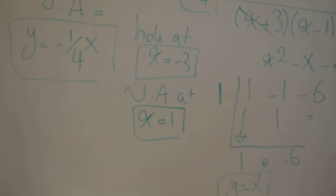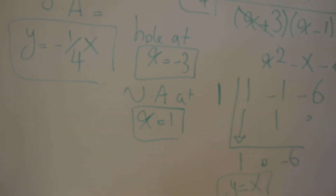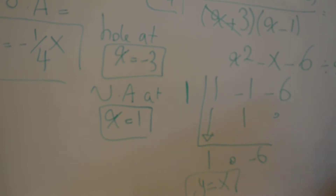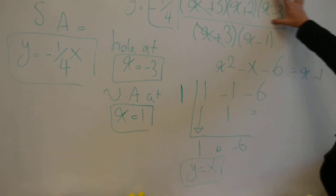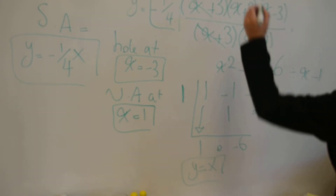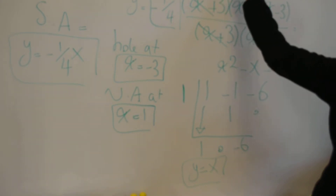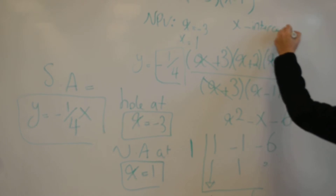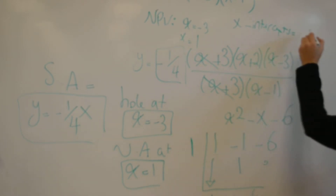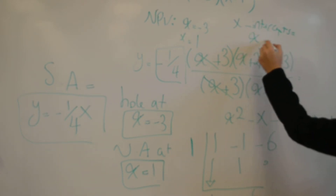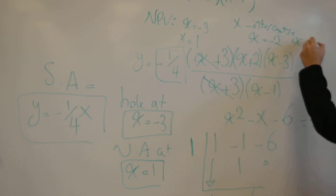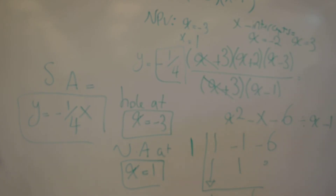The last thing we need to do is find our x-intercepts and y-intercepts. Our x-intercepts are located on our numerator, which are x minus 2 and x plus 3. Those are our x-intercepts.